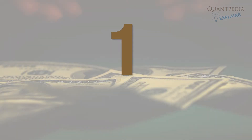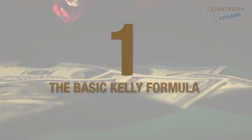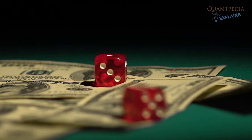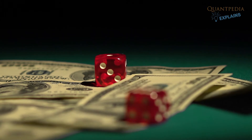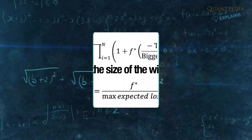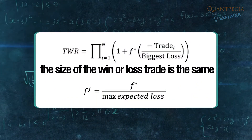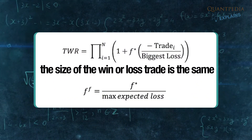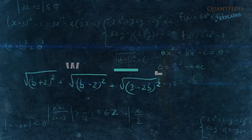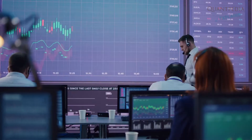Firstly, the basic Kelly formula was primarily designed for binary outcomes and originated from the theory of gambling. The Kelly formula is a calculation method appropriate for trading strategies where the size of the win or loss trade is approximately the same, and there are just two states: you win or lose.